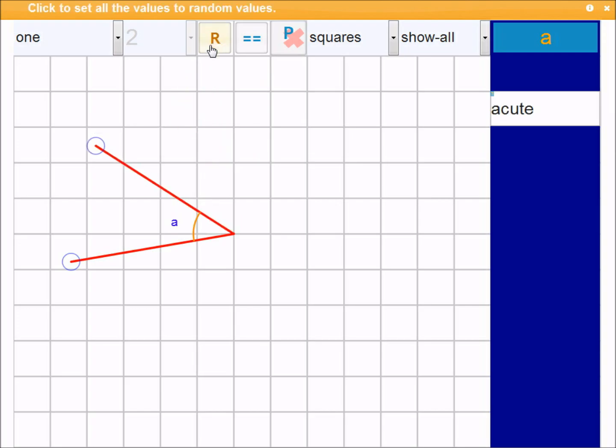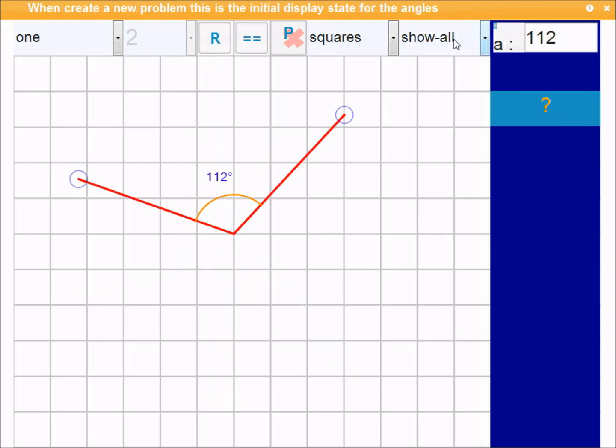You can also use that with the random button, and you'll see the different angle. In this case, you might want to hide this angle all the time. So you could ask your children, what type of angle is this? Check. It's obtuse.